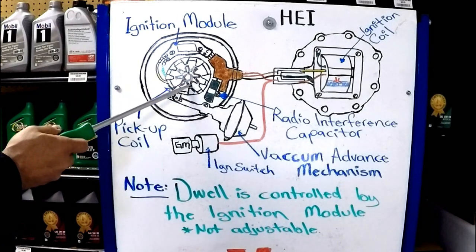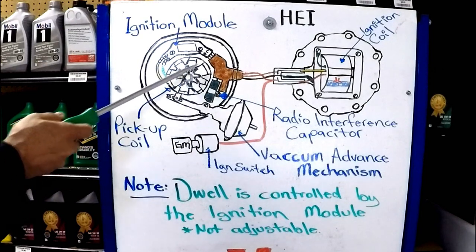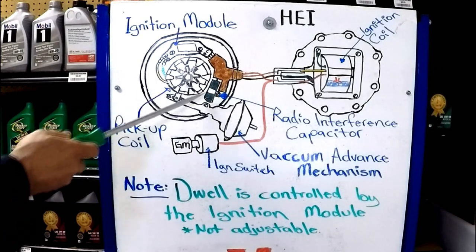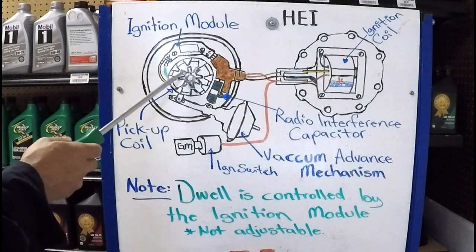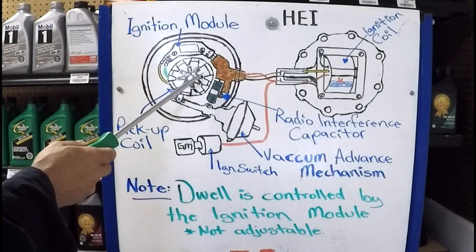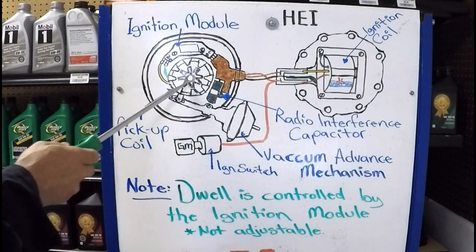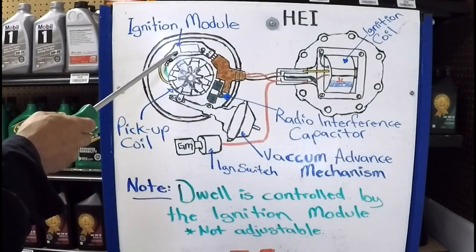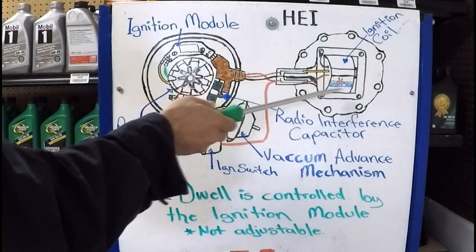So we have one, two, three, four, five, six, seven, eight. And obviously there's eight on the outside too. So every time the teeth of the reluctor timer align with the teeth of the pole piece, there's an induced voltage in the pickup coil. The signal's the ignition module to open the ignition coil primary circuit.